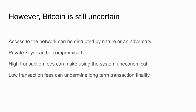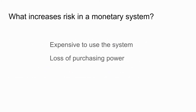Bitcoin is the least uncertain monetary system in existence — but it is still uncertain. Network access can be disrupted, private keys can be compromised as famously happened with Mt. Gox. Bitcoin also has volatile transaction fees: high fees make the system uneconomical, while low fees could undermine long-term transaction finality — a topic being discussed at this conference. Bitcoin is by no means a system with 100% certainty.